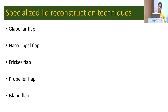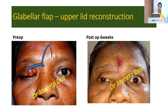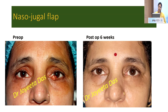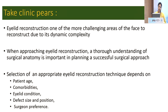There are some specialized grafts: the glabellar flap, which can be used in upper lid reconstruction, and the nasal jugal flap, which is used to fill the defect of the medial lower lid. This is the pre- and postoperative picture of this case.